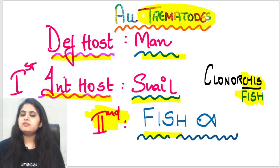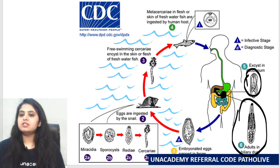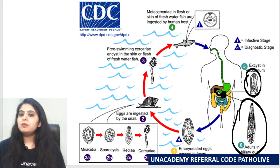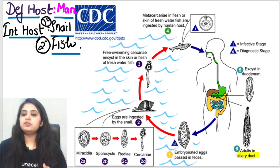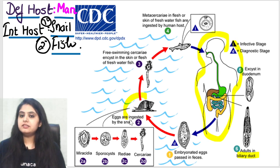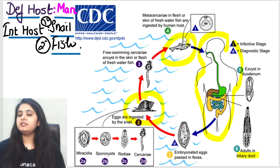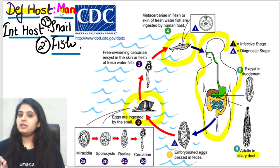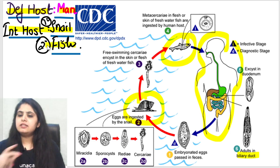Let me show you how the life cycle is going to be, then we'll decode it. When I show you a life cycle, pick up the hosts. What do you see? Number one, a human; number two, a snail; and number three, a fish. So the definitive host is man, the first intermediate host is the snail, and the second intermediate host is the fish. Let us take two minutes and decode this life cycle.